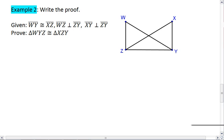So given the diagram at the side, and also given that WY is congruent to XZ, the WZ is perpendicular to ZY, and the XY is perpendicular to ZY. I want you to prove triangle WYZ congruent to triangle XZY.